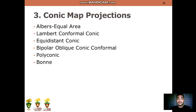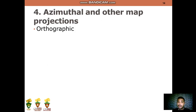For Topic 3, it's all about conic map projections. We have Albers Equal Area, Lambert Conformal Conic, Equidistant Conic, Bipolar Oblique Conic Conformal, Polyconic, and Bonne. And in Topic 4, we are going to discuss azimuthal and other map projections.